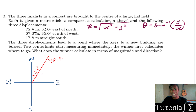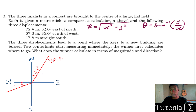The second displacement is at 36 degrees south of west. West is on the left, and south of west is down from there, so 36 degrees south of west is measured from west downward. The third displacement is 17.8 meters straight south — just pointing directly downward on the plane.